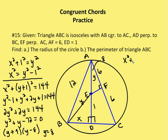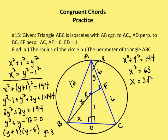So X² + 9² = AB², which is 144. That gives X² = 144 − 81 = 63. Taking the square root of both sides, X = ±√63. Since X cannot be negative, X = √63.